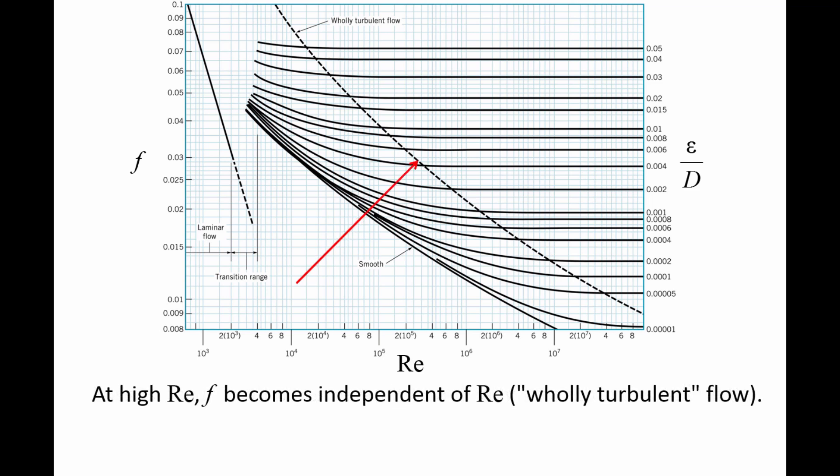At relatively high Reynolds number values, notice that all the curves become horizontal, which means the friction factor becomes a very weak function of the Reynolds number. We call this flow regime wholly turbulent. Physically, it represents a flow where the size of the viscous sublayer has been reduced to the size of the roughness.